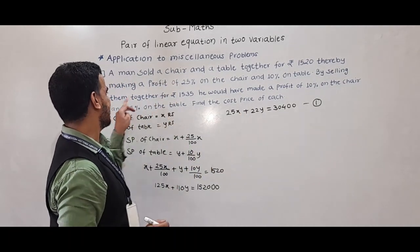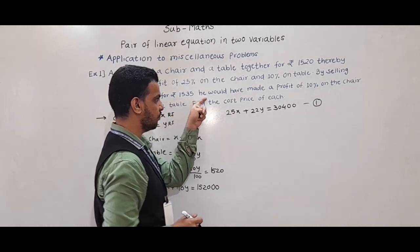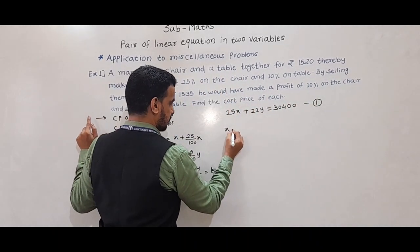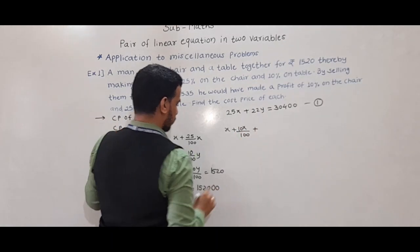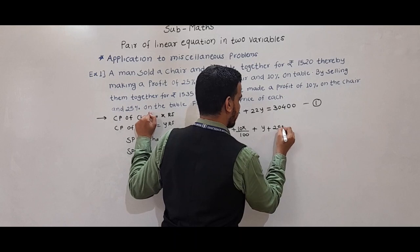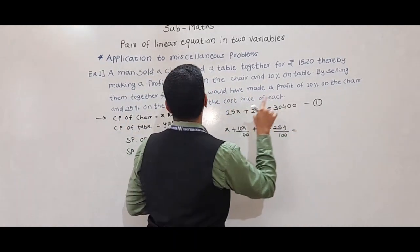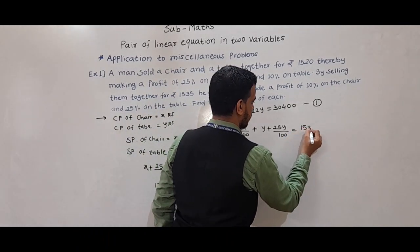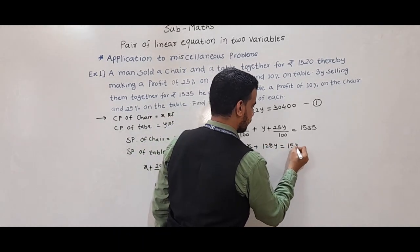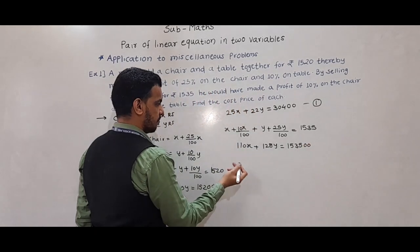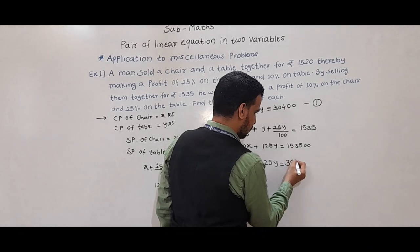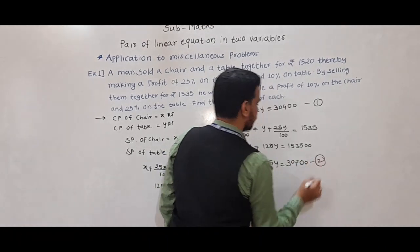Similarly, for the second condition: by selling them together for Rs. 1535, with profit of 10% on chair and 25% on table. So X + 10X/100 + Y + 25Y/100 = 1535. Simplifying: 110X + 125Y = 153,500. Dividing by 5, the second equation is: 22X + 25Y = 30,700.